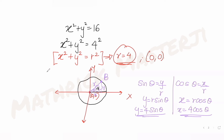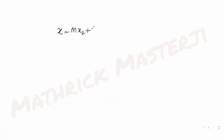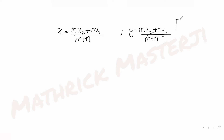So the coordinates of B are (4cosθ, 4sinθ). Now, let's find the locus of point P, which divides line segment AB in the ratio 3:2. Let point P have coordinates (h, k). Using the section formula: x = (mx₂ + nx₁)/(m+n) and y = (my₂ + ny₁)/(m+n), where m = 3 and n = 2.